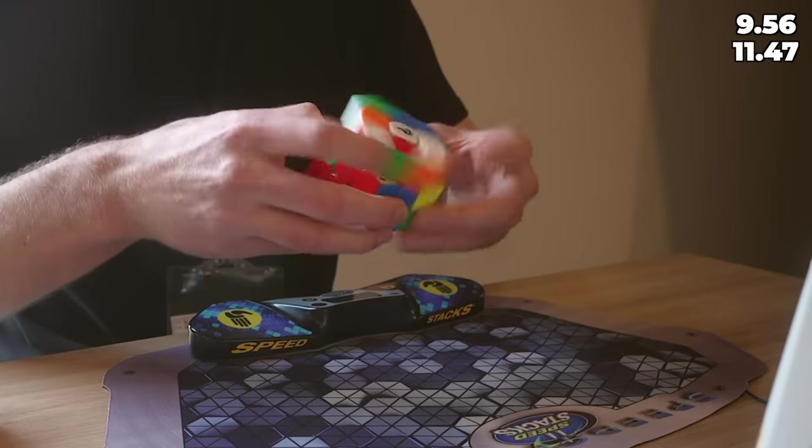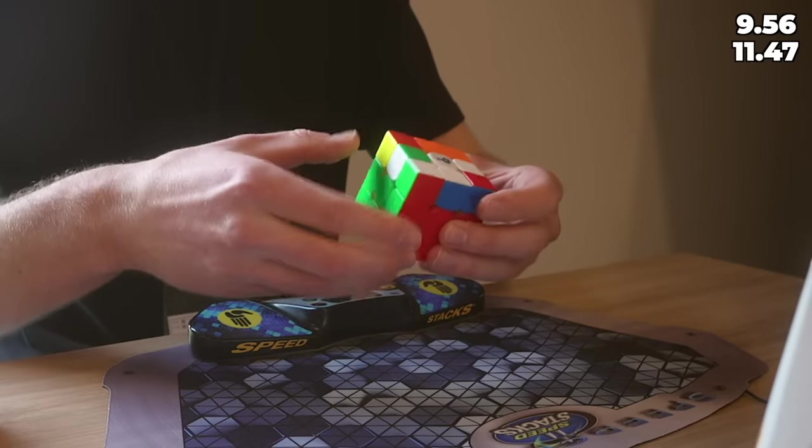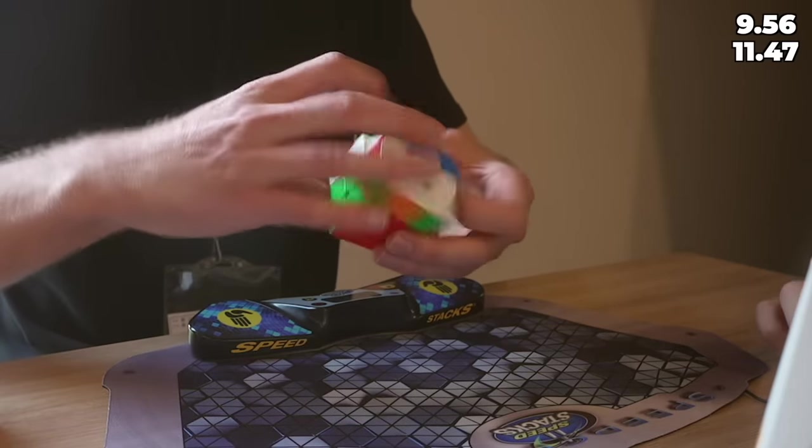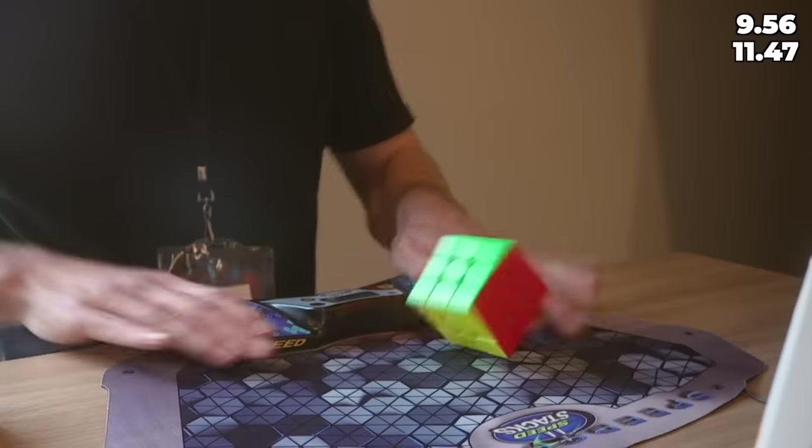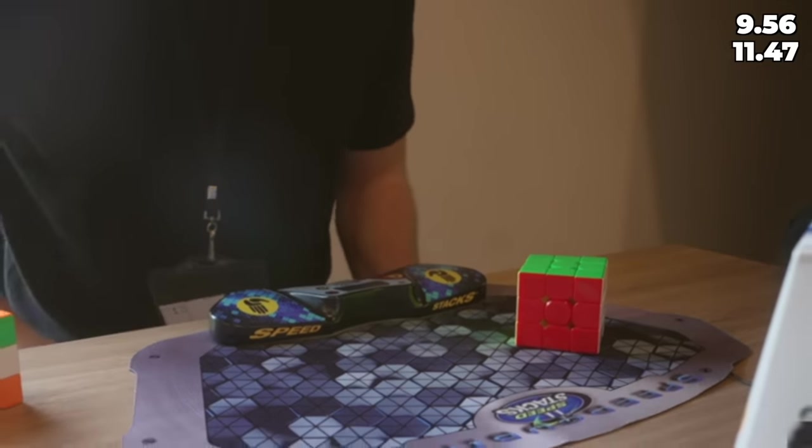Right now you can see me inspect the yellow cross so probably something nice is gonna happen. The start is pretty okay, last pair is kind of awkward, some nice OLLs and actually the G perm was really good so I think this was a pretty decent time.